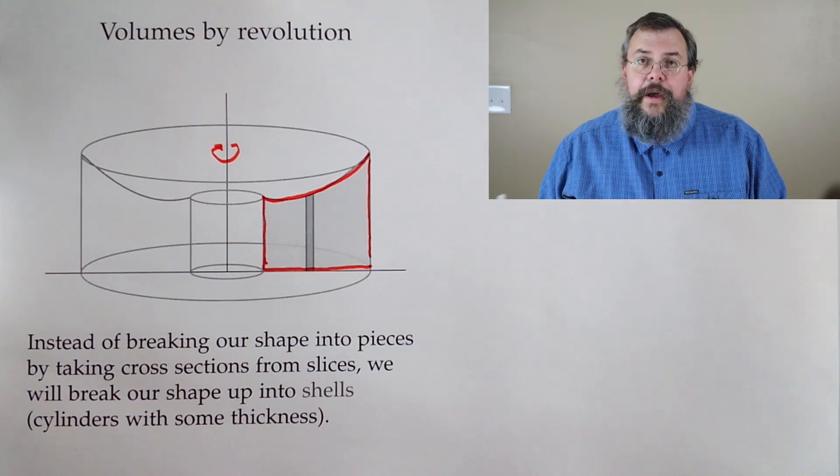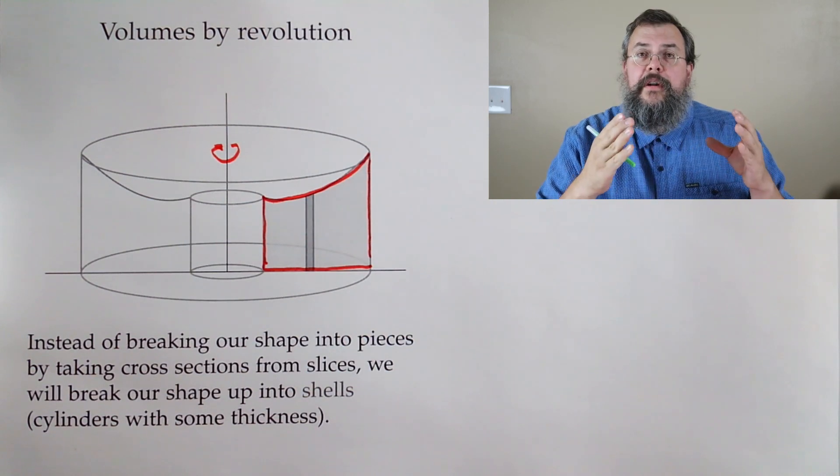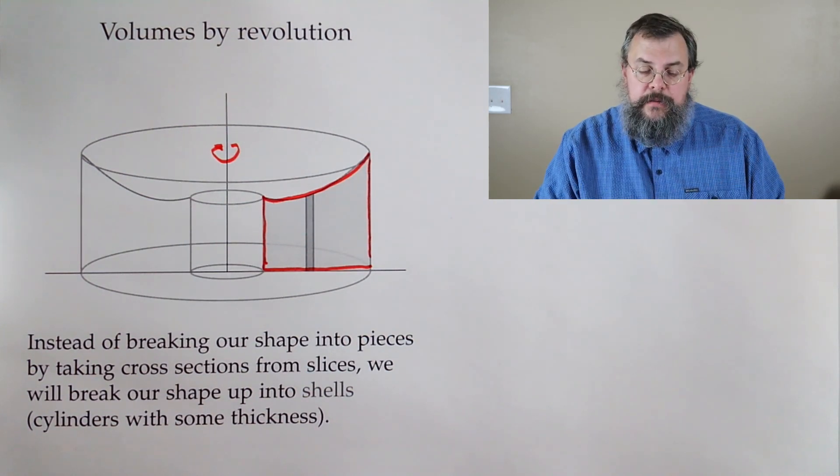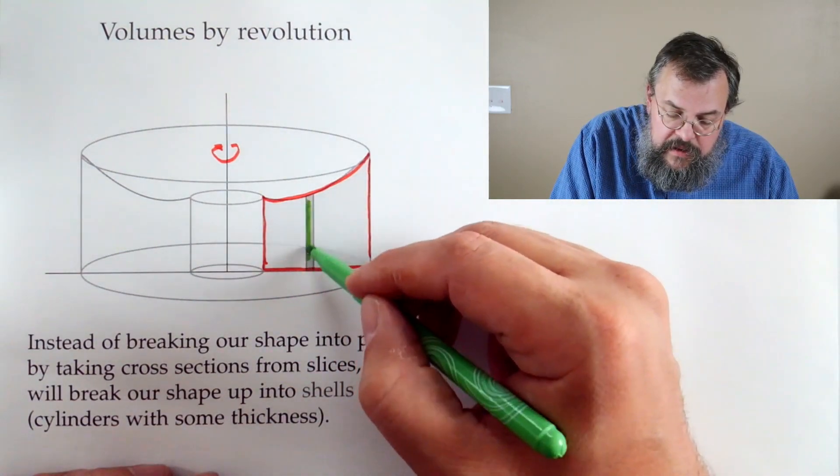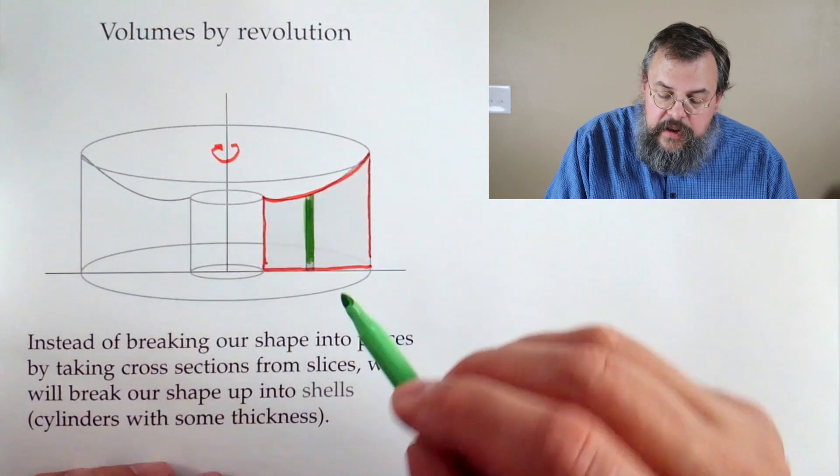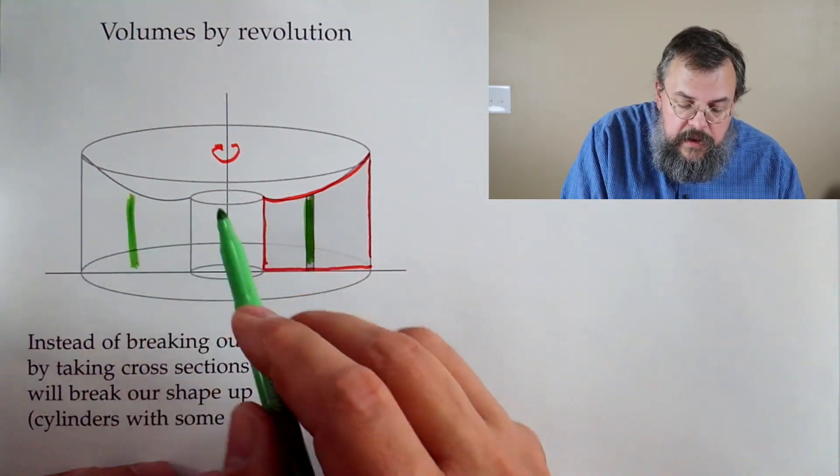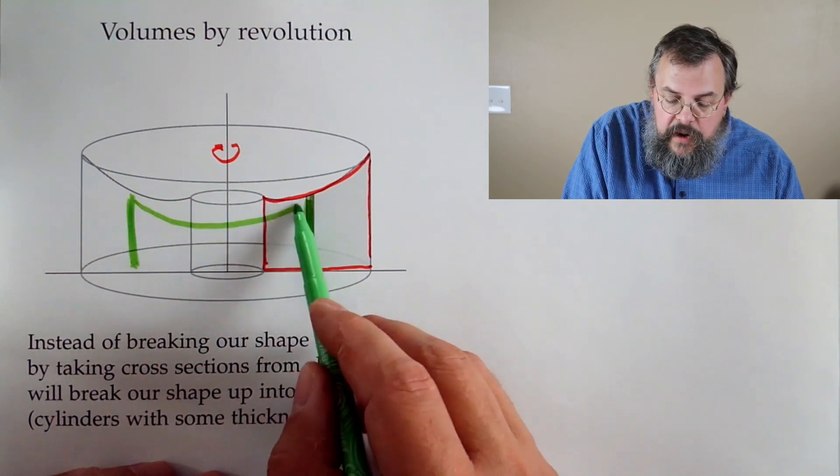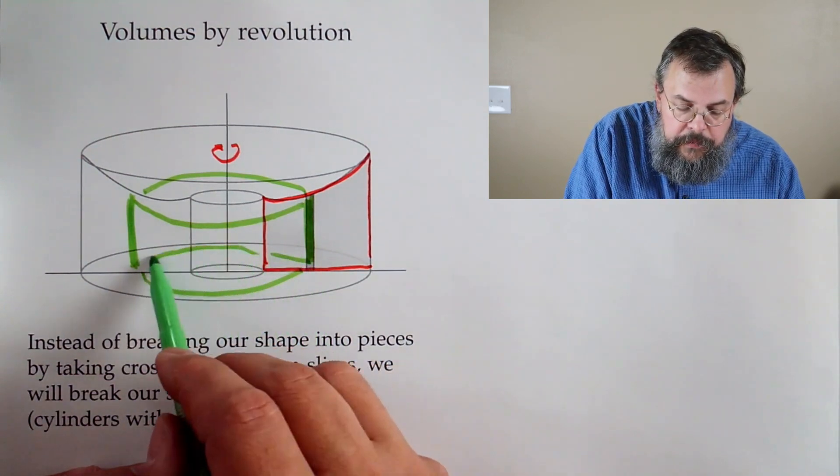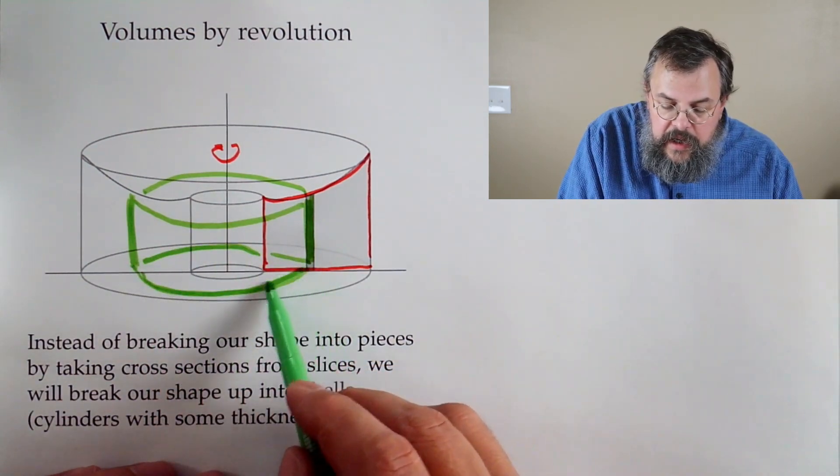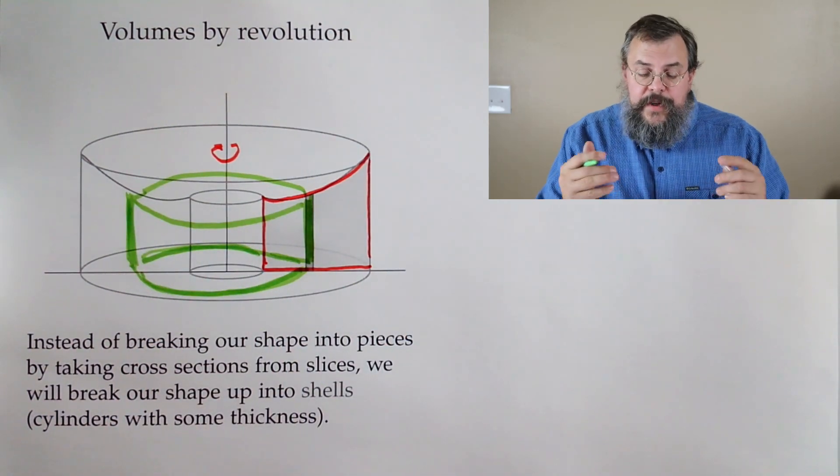Our basic setup is still the same. We're going to take a region, and in this case, here's our region right here. And we're going to spin it. Now, of course, when we spin, we're going to spin around anything, and when I say anything around any line. In this case, it looks like we're spinning this way. And as we spin, we're going to form a shape.